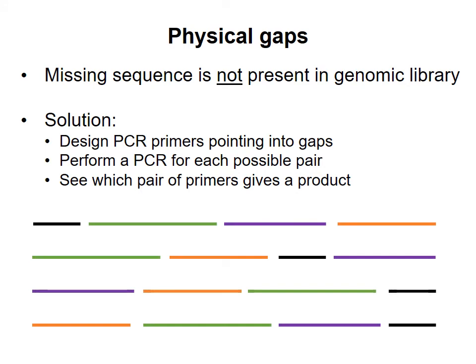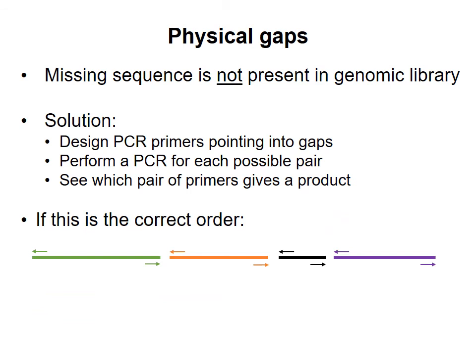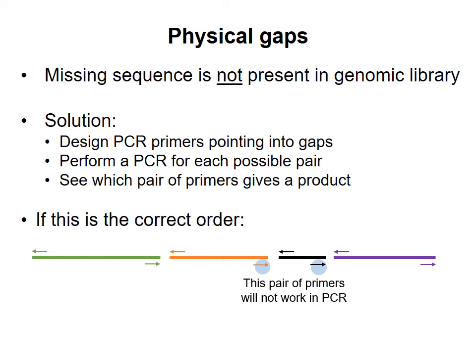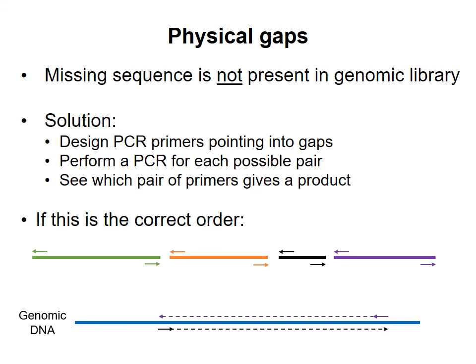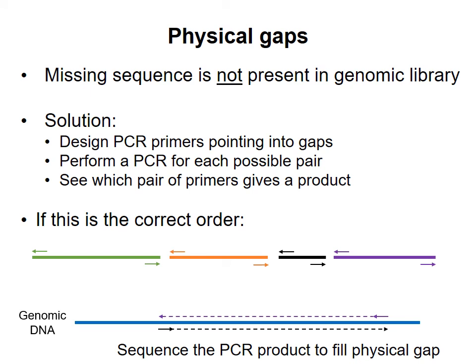I'll go over that again using diagrams. Here we have four contigs in some different possible orders. The researchers designed PCR primers that would anneal to the ends of the contigs with the 3' end of each primer towards the physical gap. Suppose that this is the correct order of the contigs — certain combinations of primers will be properly positioned to make a PCR product. Other combinations will not be pointing in the proper directions, or they'll be too far away from each other for a PCR product to be possible. Primers that do work together will anneal to the genomic DNA sequence on either side of the physical gap, and will make a PCR product that can be sequenced to fill the physical gap. This is how the remaining 42 contigs were joined together in the H. influenzae sequencing project to produce the intact genome.